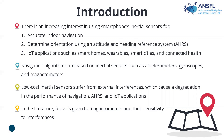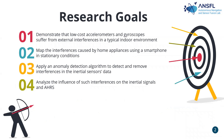In my paper, I focus on the accelerometer and gyroscope, while in the literature the focus is mainly on the magnetometer. My research goals are the following: first, to demonstrate that low-cost accelerometers and gyroscopes are affected; second, to map the interference caused by home appliances using a smartphone in stationary conditions; third, to apply an anomaly detection algorithm to detect and remove interference in the inertial sensor data; and finally, to analyze the influence of such interference on the inertial signal and AHRS.